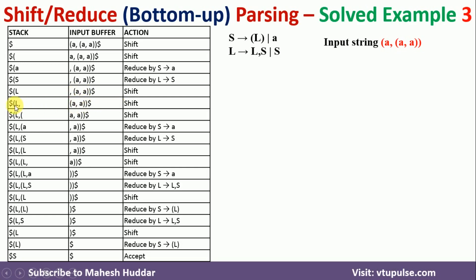Again we cannot apply any rule, so we shift the next token, which is opening parenthesis again. We still cannot apply anything, so we shift the next token A. Now A can be reduced to S, and then S can be reduced to L. So two reduction steps are performed: A is reduced to S, and then S is reduced to L.